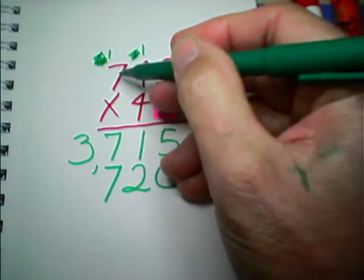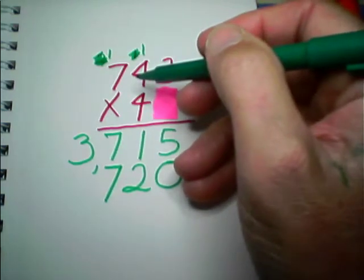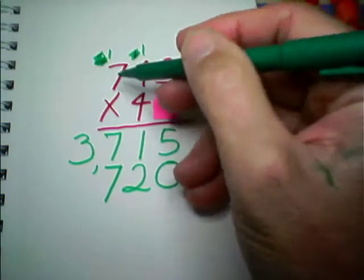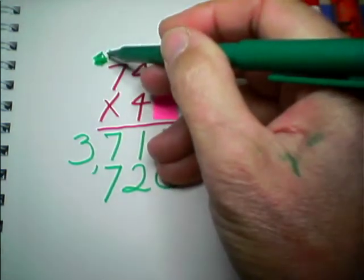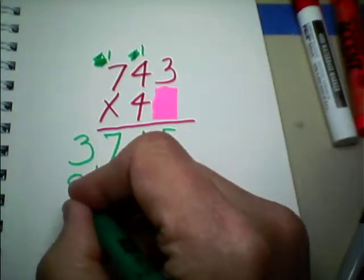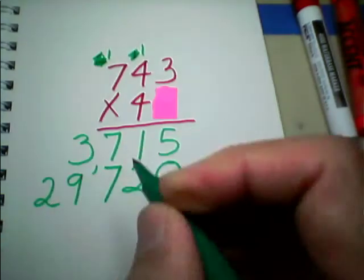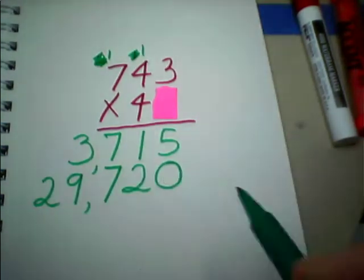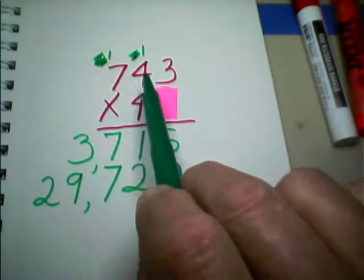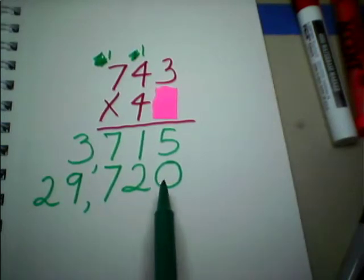4 times 7 is... 14 twice? 28? Is that right? Yep, 28. 4 times 7 is 28. 28 plus the 1 that's resting will be 29. So, there's the 9 from 29, and here's the 2. So, we have an answer for our subtotal. 743 times 40 is 29,720.